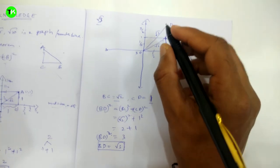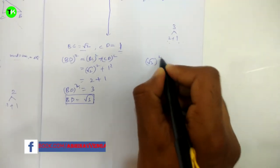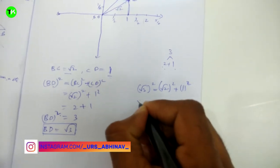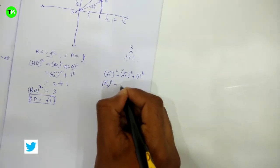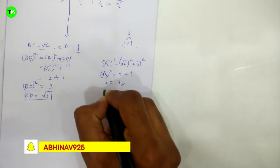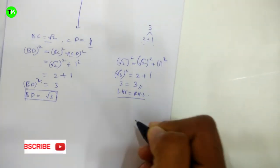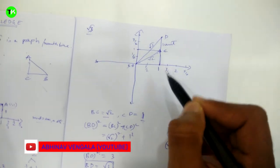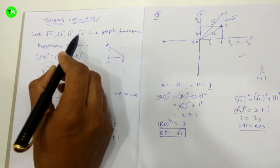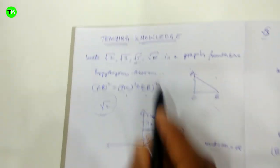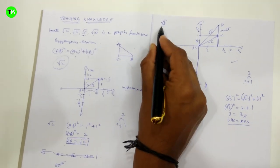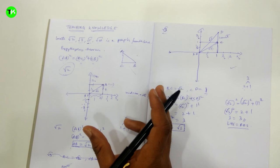We can verify: (√3)² = (√2)² + 1² → 3 = 2 + 1 → 3 = 3. LHS = RHS, hence proved. So the number line placement of √2 and √3 is correct. For root 5 and root 10, apply the same method — find which digits sum to 5 and 10, then represent them in the graph.